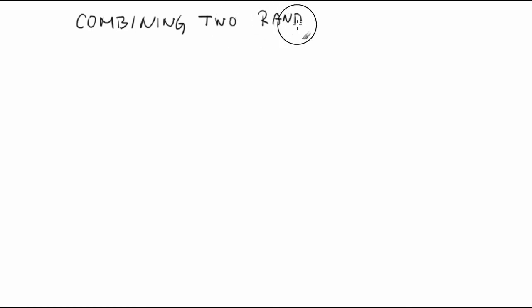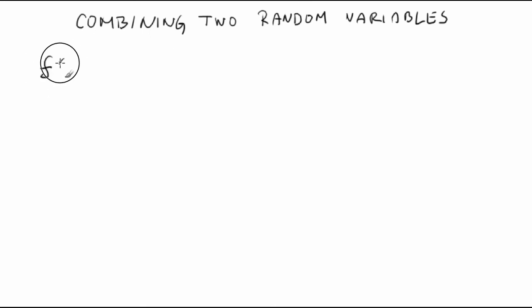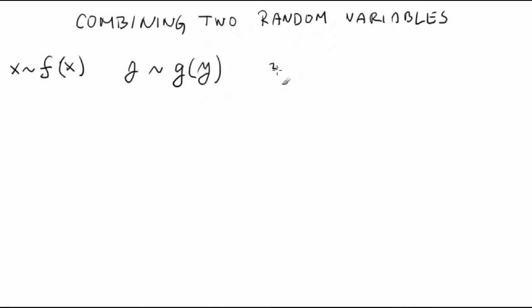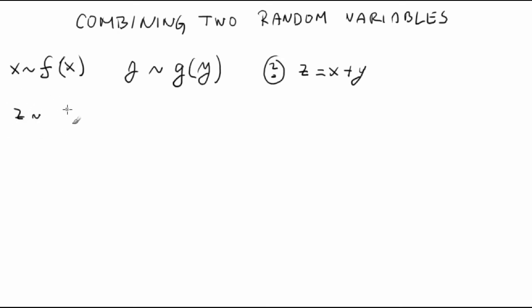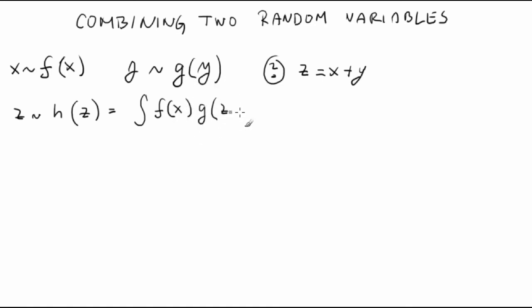Let's now move to a new topic. A common situation can be that we know probability density functions for two random variables: x distributed according to f, and y distributed according to g. We want to know the probability density function for their sum. The sum z = x + y is distributed according to a PDF h that is a convolution of f and g: h(z) equals the integral of f(x) times g(z minus x) dx.